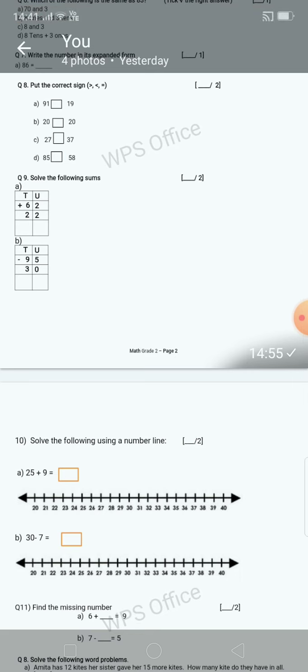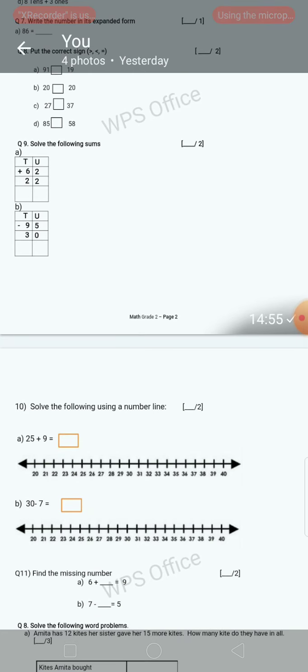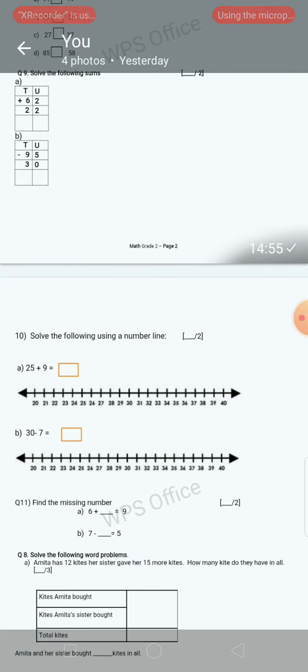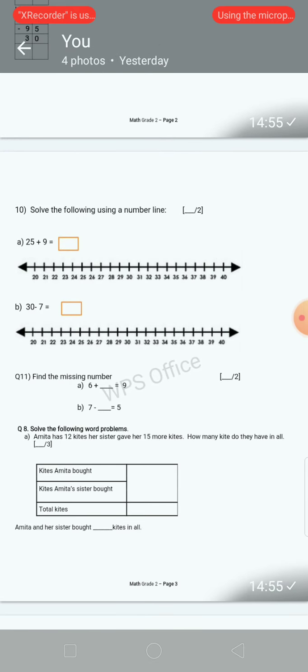Solve the following sums. So here there are one addition and one subtraction sum. You have to draw blocks and solve the sum. You cannot just write the answer, there are no marks for that. So draw blocks like this, okay?